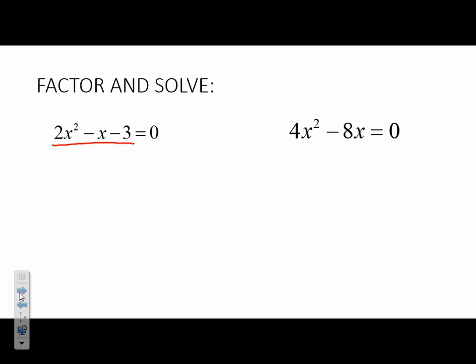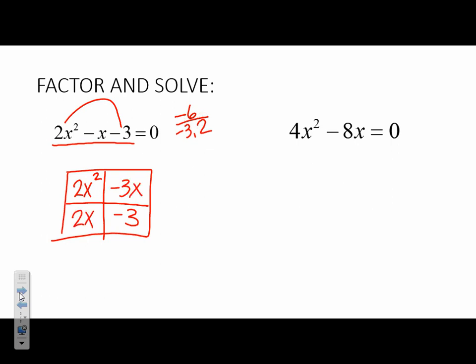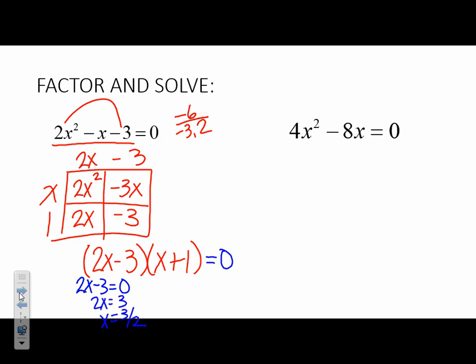So again, factor and solving. AC method looks like I'm going to use here. So 2 times negative 3 is negative 6. What multiplies to make negative 6 and adds to make negative 1? Negative 3 and 2. Go ahead and put them in the squares. 2x squared minus 3x. The a and the c stay the same. Then these are the two from my list. And I'm going to pull something out from each row and column. 2x minus 3, x plus 1. And then to solve, I set them equal to 0. That means each piece is equal to 0. Then I'll add the 3. x equals 3 over 2. And then I'll subtract the 1. Two solutions for every problem.